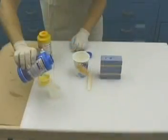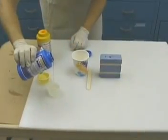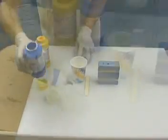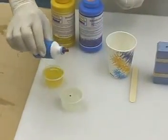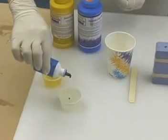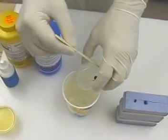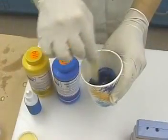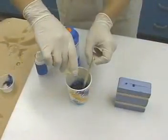A small amount of Smooth-Cast 300 part A and B is dispensed in equal amounts. To give the finished casting a little color, a couple of drops of So-Strong color tint is pre-mixed with part B. Parts A and B are then mixed thoroughly for about a minute.